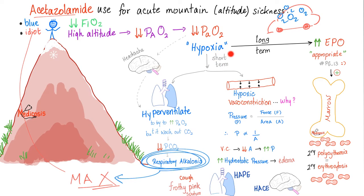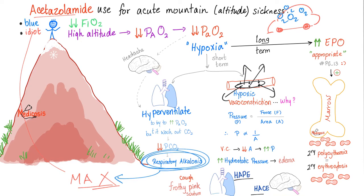Hypoxia leads to hypoxic vasoconstriction. When you vasoconstrict, you decrease the area. Pressure equals force over area — when you decrease the area, you increase the pressure, provided force remains constant — called physics, baby. So vasoconstriction increases hydrostatic pressure. When you increase the pressure inside the vessel, it's greater than the pressure outside, forcing fluid out. You end up with edema — edema around your brain, called high-altitude cerebral edema; edema around your lungs, called high-altitude pulmonary edema.